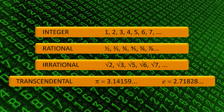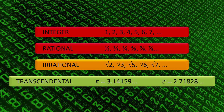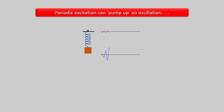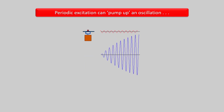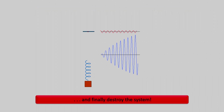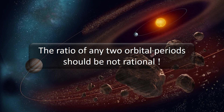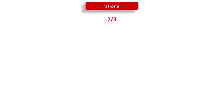Integer and rational frequency ratios provide resonance interaction that can destabilize a system. An integer frequency ratio causes a periodic excitation that optimally transfers the energy of one oscillation to another. Because of this repeated energy input, the system swings ever more strongly until its load limit is exceeded and it is destroyed. With reference to the solar system and its stability, we may therefore expect that the ratio of any two orbital periods should not be rational.